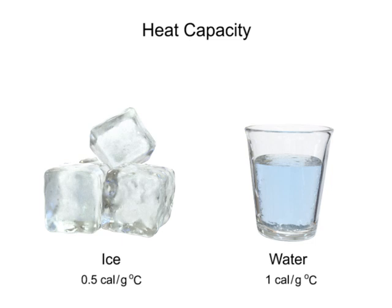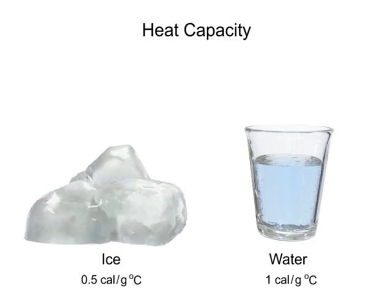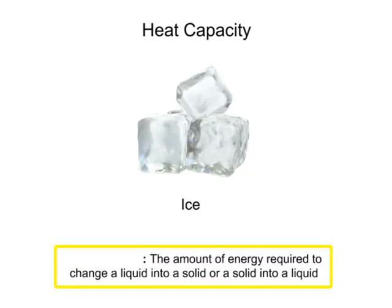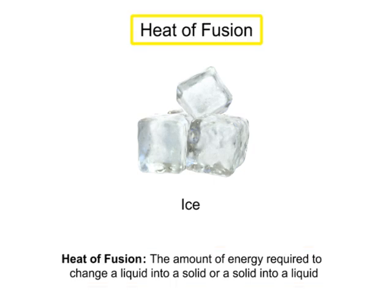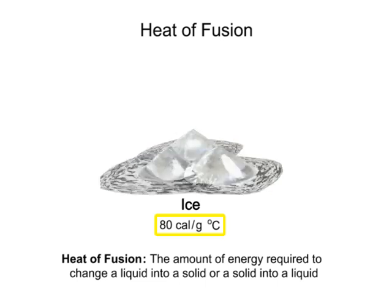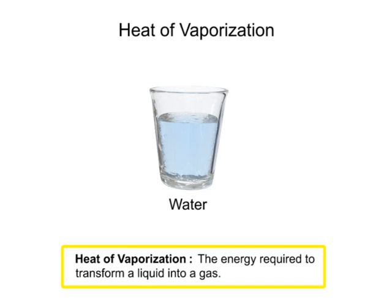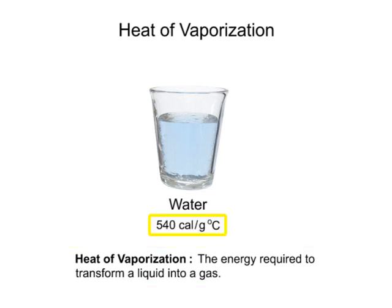The processes of phase change between solid, liquid, and gas also require a specific amount of heat energy. The amount of energy required to change a liquid into a solid or a solid into a liquid is known as heat of fusion. The amount of heat required to change 1 gram of ice to water is 80 calories. Similarly, the heat of vaporization is the energy required to transform a liquid into a gas. It requires 540 calories to change 1 gram of liquid water into a gas.